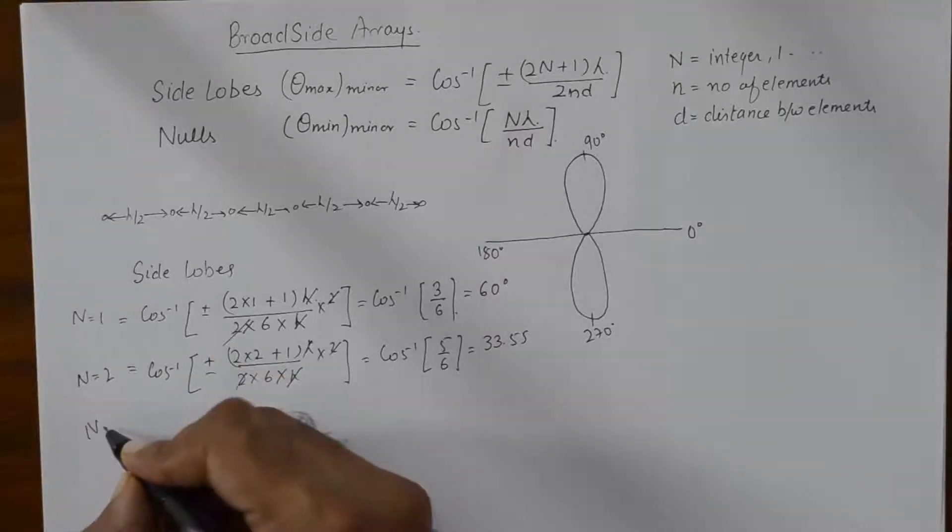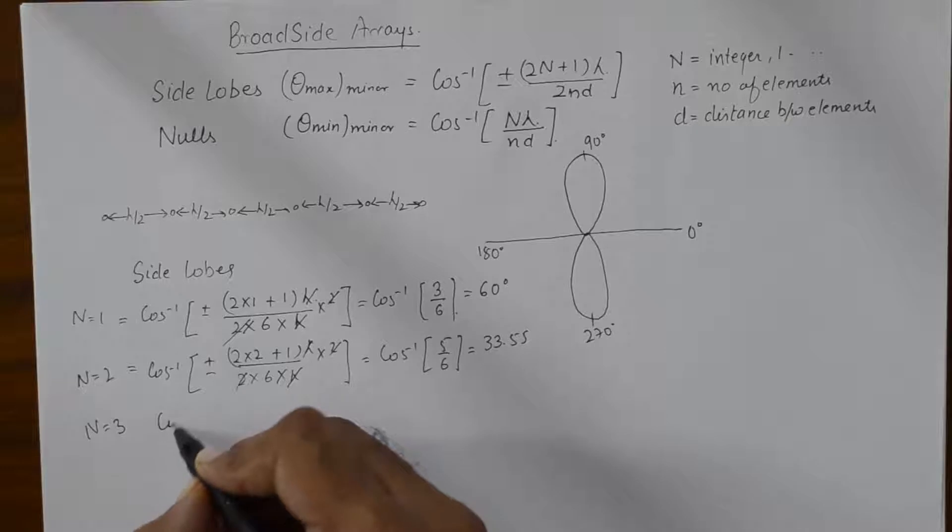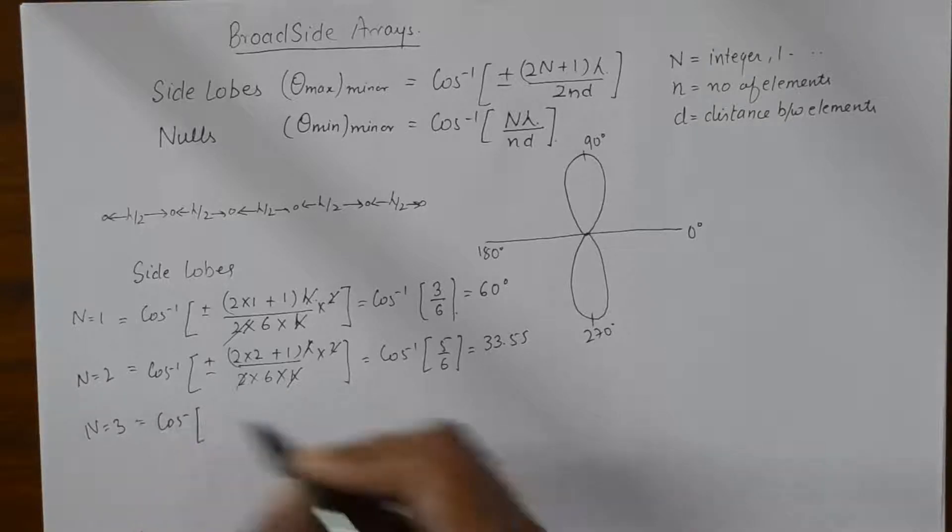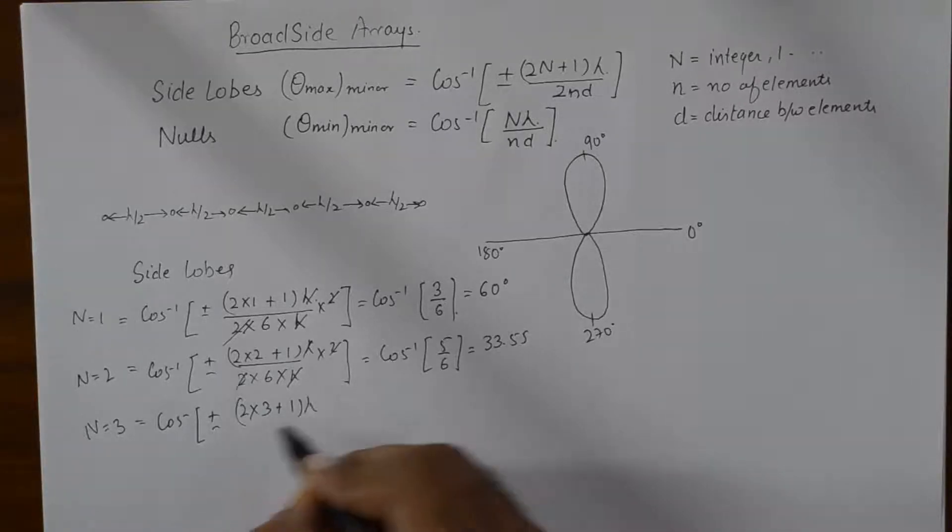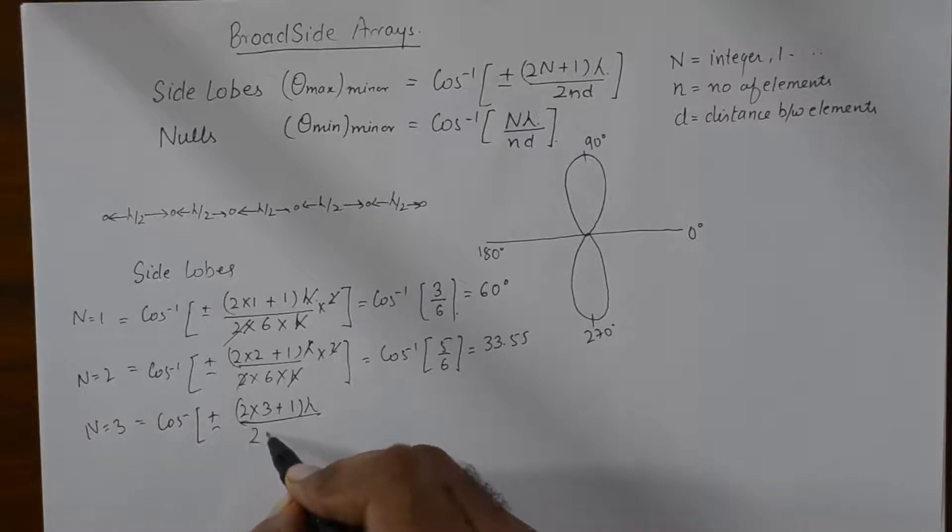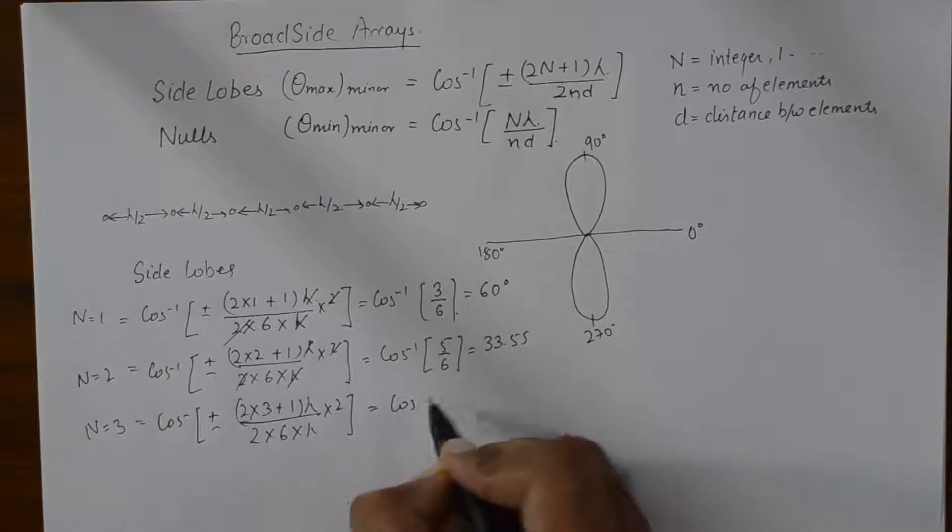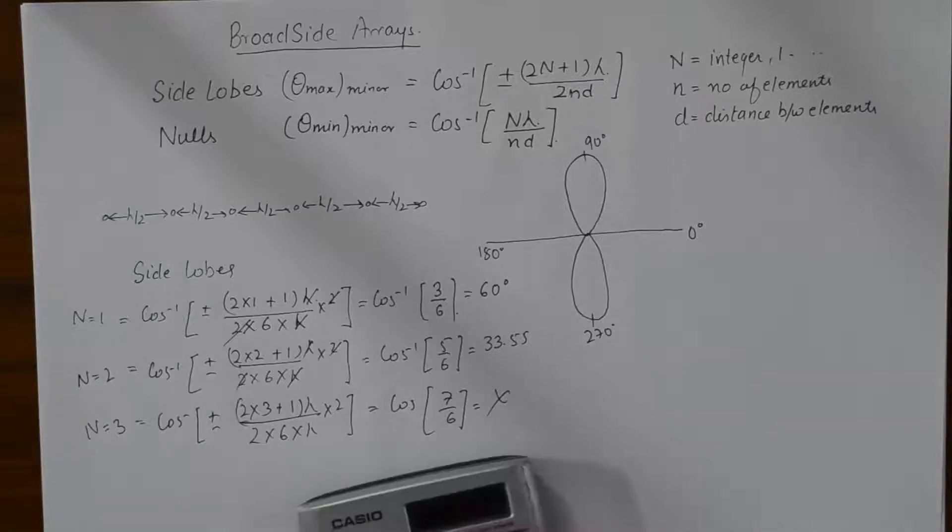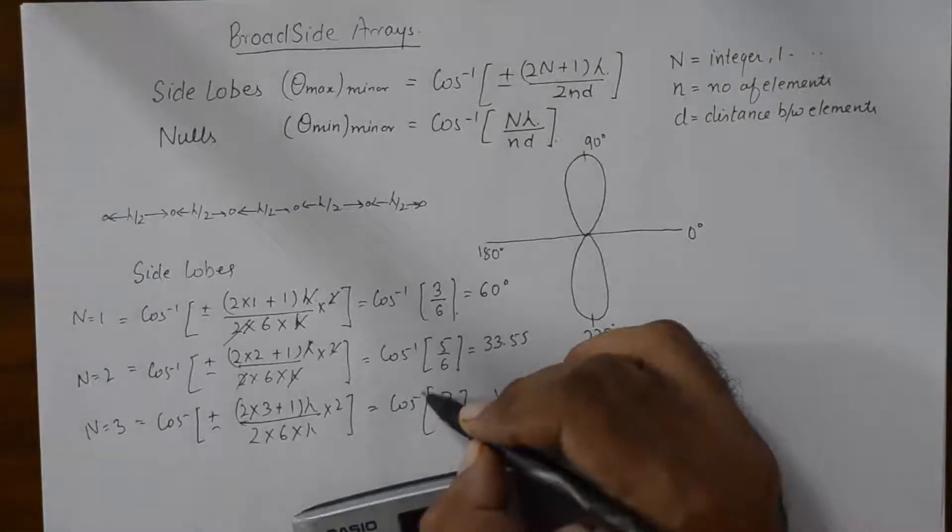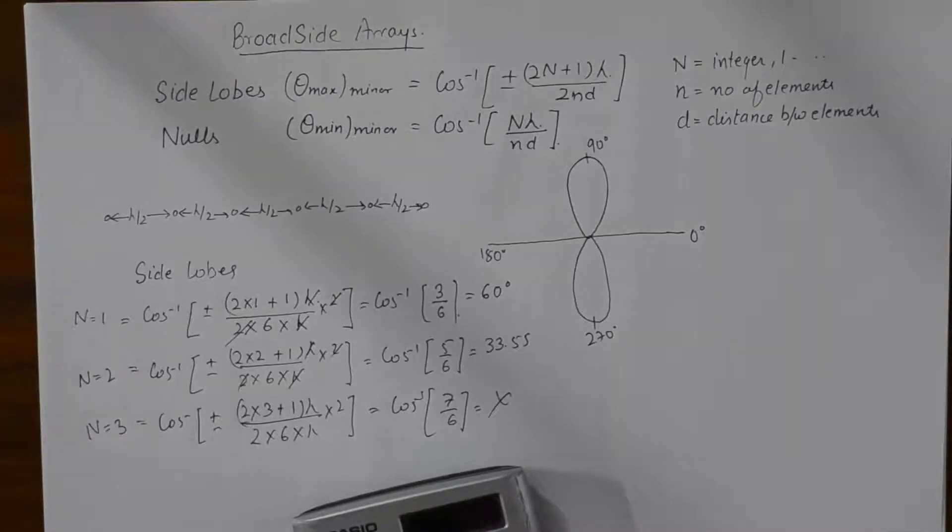Now, if we do for N is equal to 3, so this will give us an invalid value for cos inverse greater than 1. So, this will give us 7 by 6 for which we will not get any valid value of an angle. So, we have found these side lobe angles.